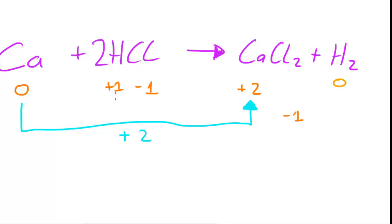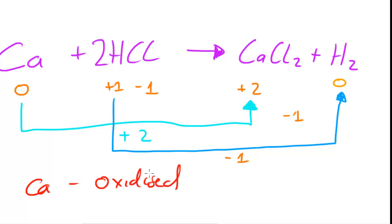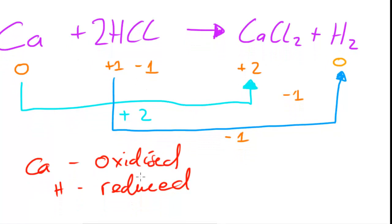Since calcium has been oxidized, something else must have been reduced — in this case hydrogen. Hydrogen's oxidation number has changed from plus one to zero, so its oxidation number has decreased, meaning hydrogen has been reduced. Therefore this is a redox reaction because something has been oxidized and something else has been reduced. Note that chlorine doesn't change — it's minus one before and minus one after.